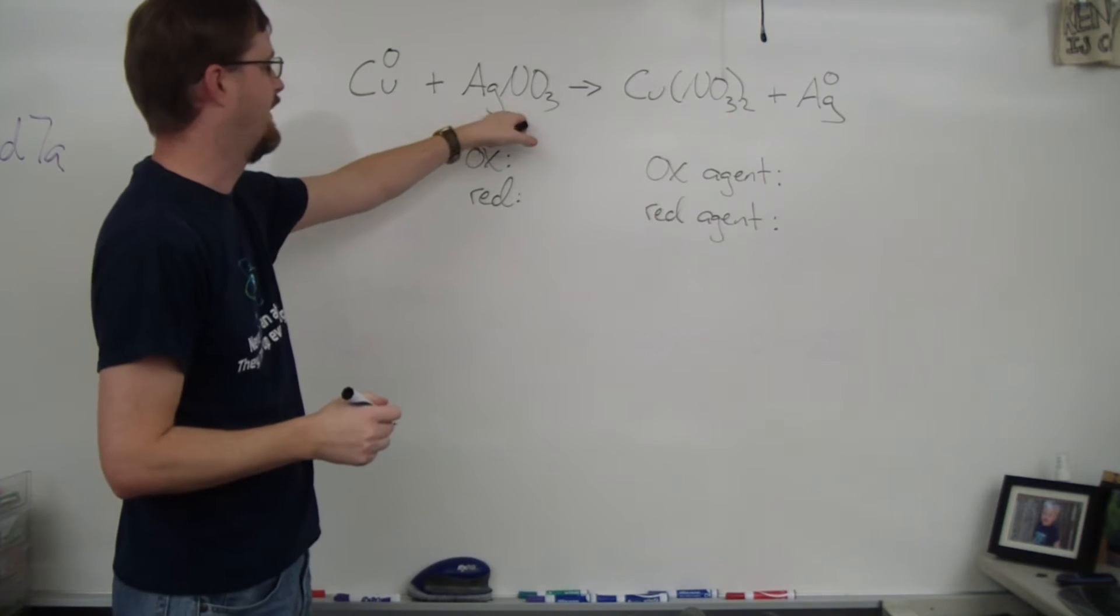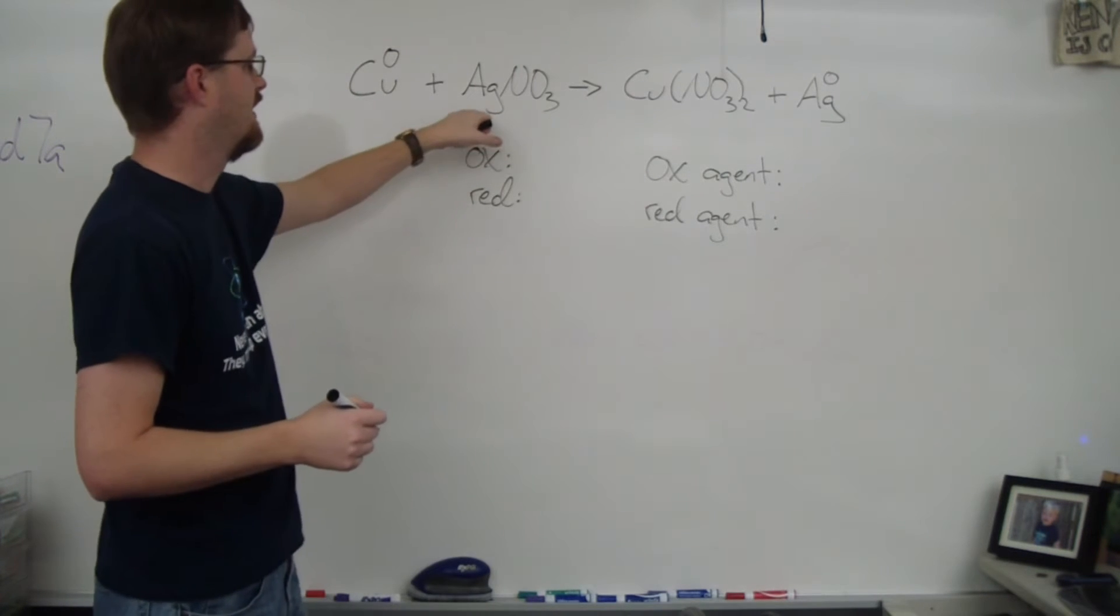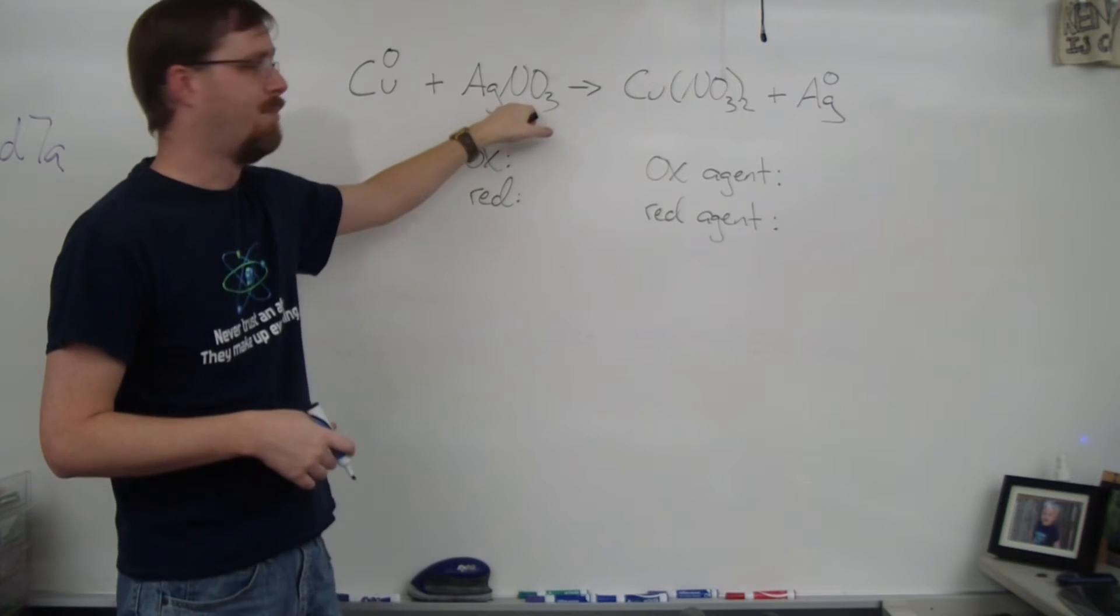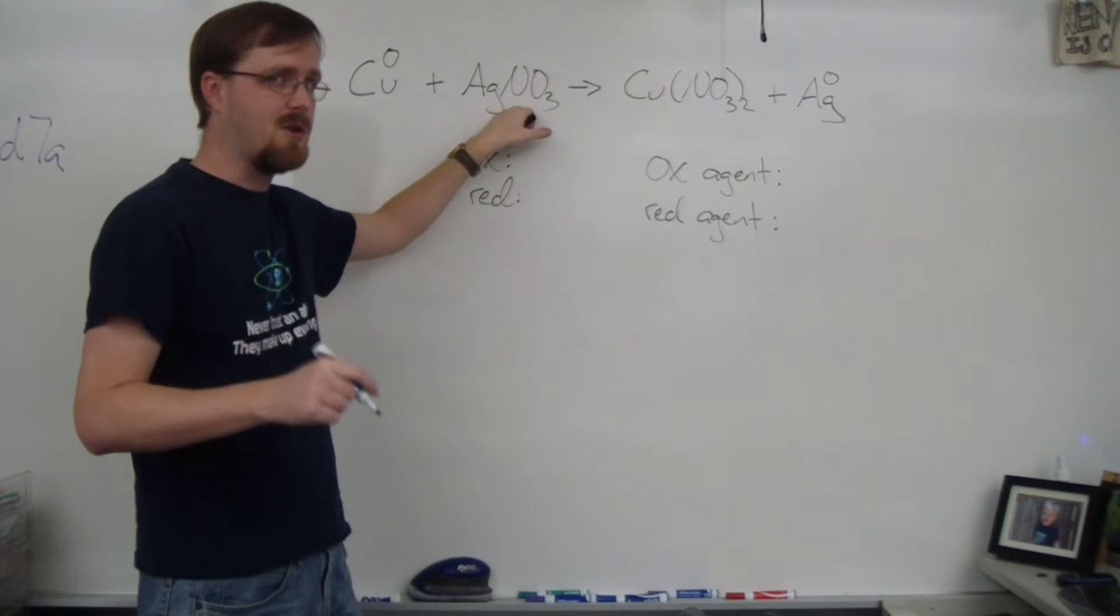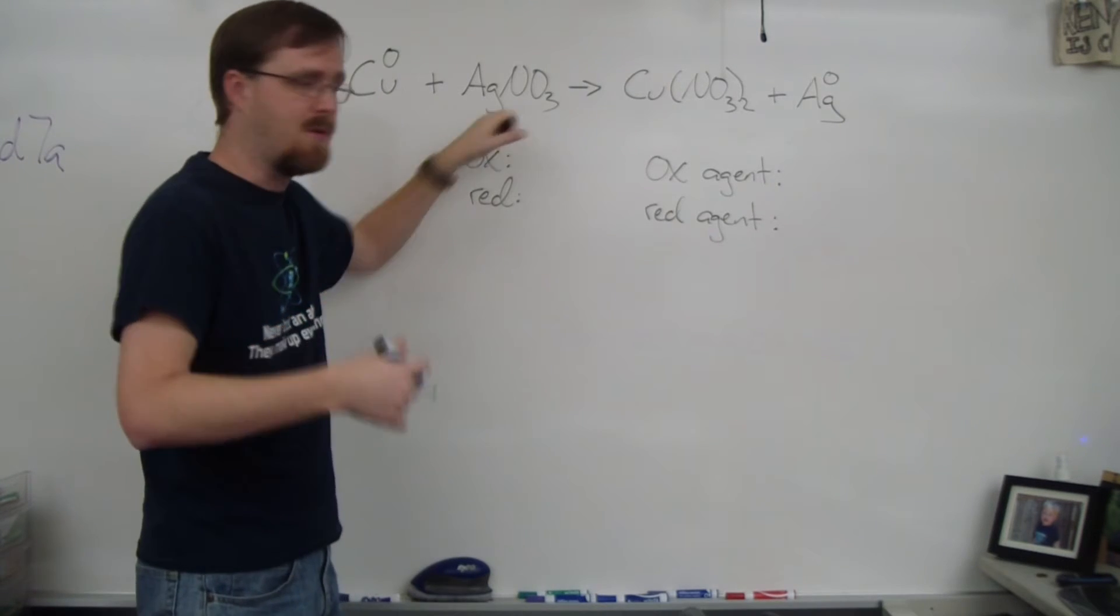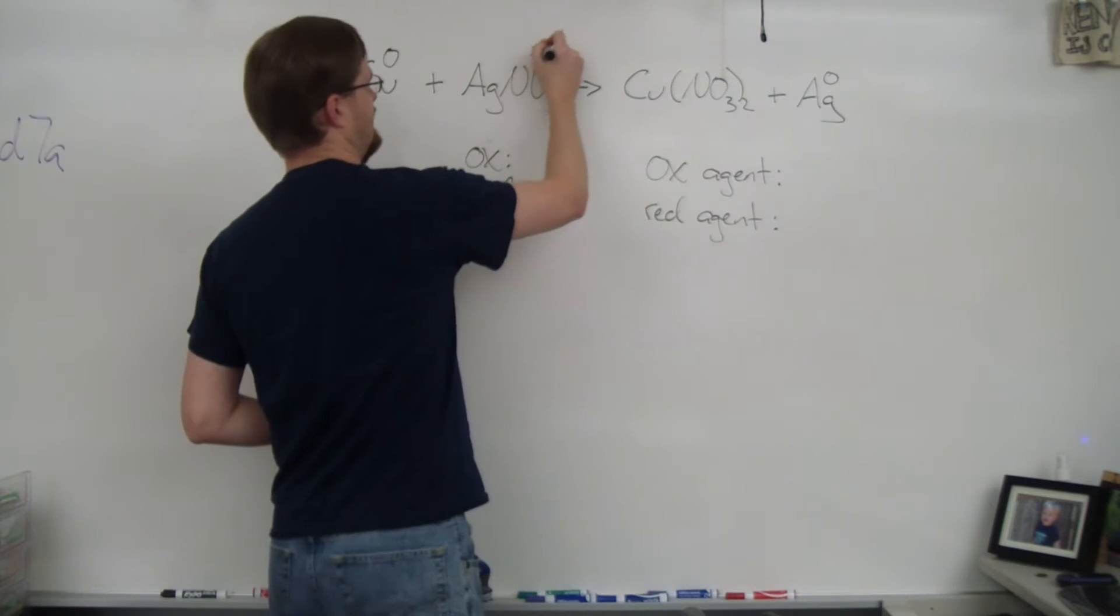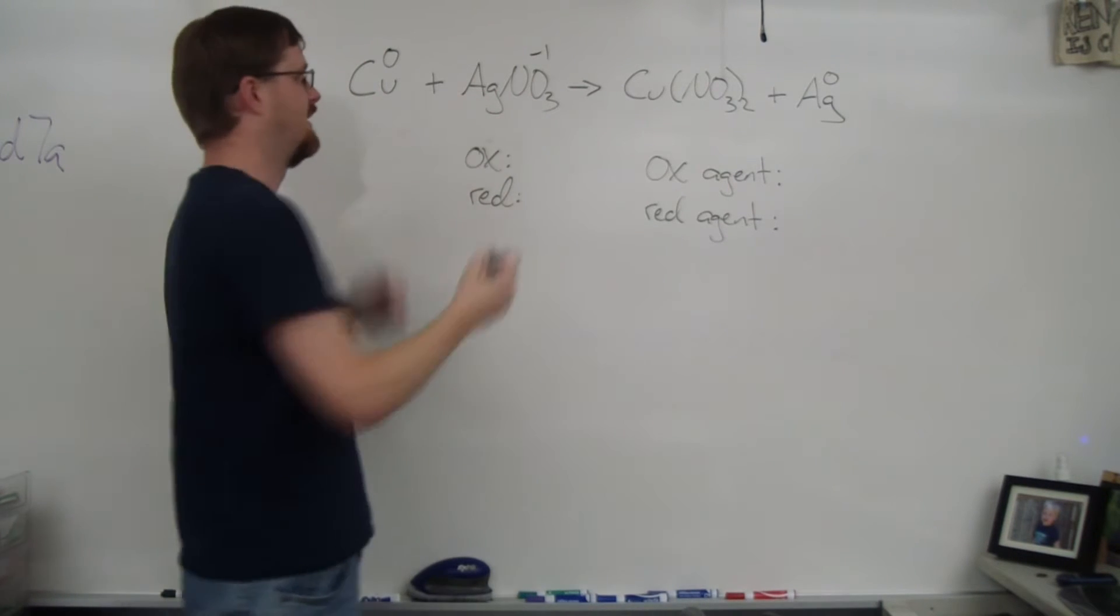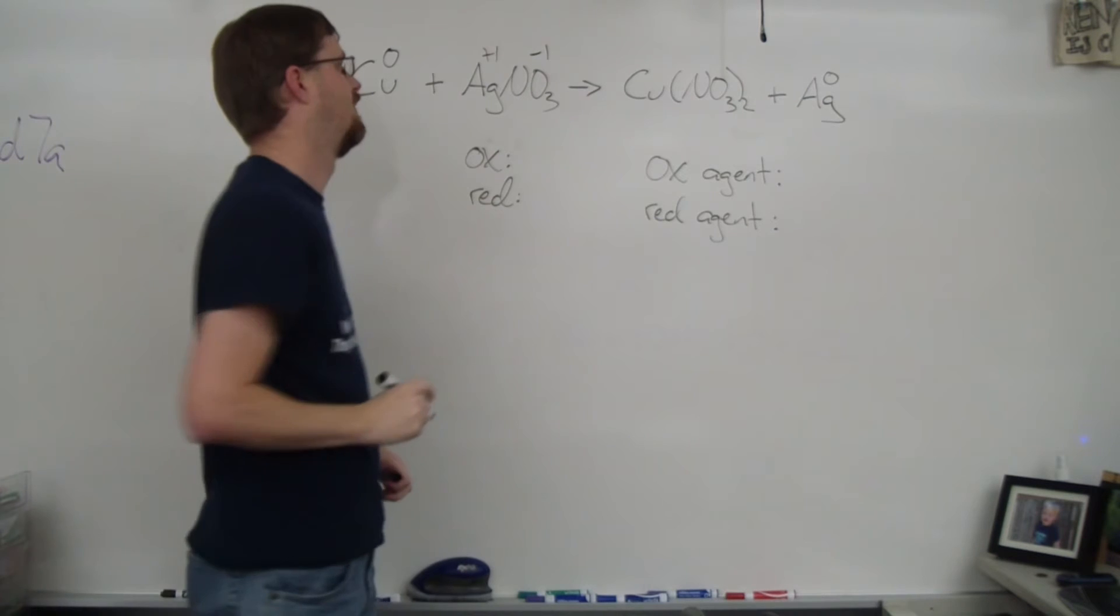Now I'm going to look at my compounds. We've got silver nitrate. Silver is a transition metal, so I can't just know its charge automatically, but I do know nitrate's charge. If you look that up on your reference chart, you'll see that nitrate is -1. To balance that out, silver must be +1.